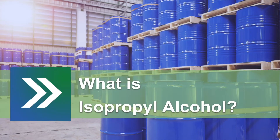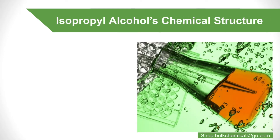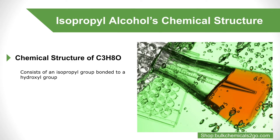What is isopropyl alcohol? Isopropyl alcohol's chemical structure is C3H8O. It consists of an isopropyl group bonded to a hydroxyl group.